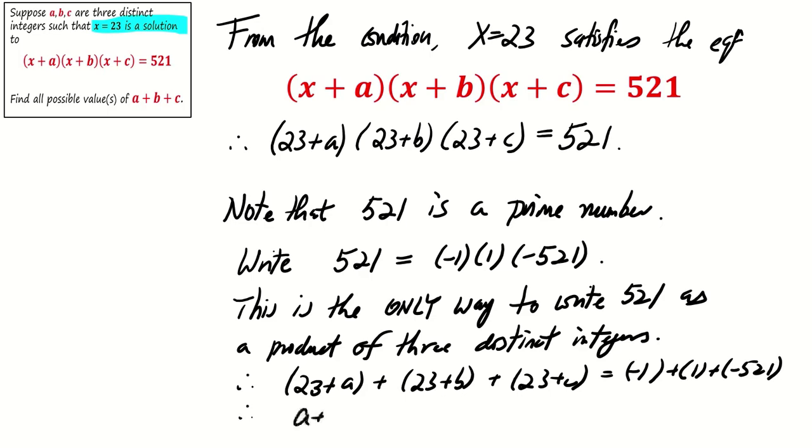This means that A + B + C = -521 - 3(23) = -521 - 69 = -590.